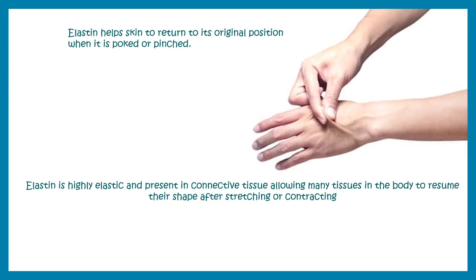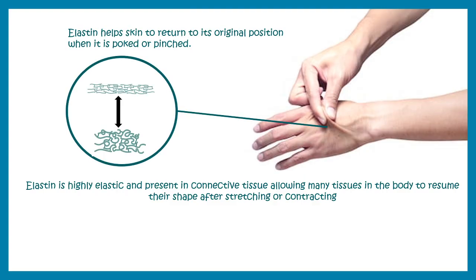Imagine that you have pulled the skin of your hand — after you release it, it returns to shape. This is due to the property of elastin. The skin behaves in an elastic manner because elastin can resist any kind of mechanical distortions. If we didn't have elastin, think about what would happen.